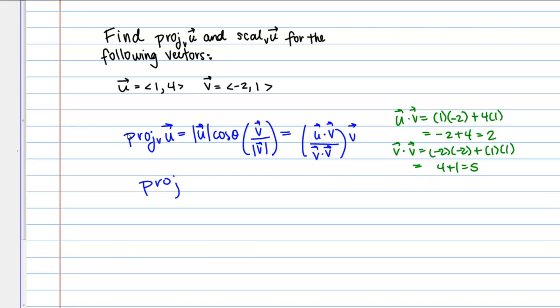Then we just fill into our formula here. We've got the dot product of U and V, so 2 over V dot V, which is 5, times vector V, which was negative 2 comma 1. Actually, it would be completely fine for you to leave your answer in this form.